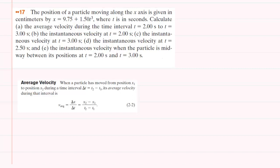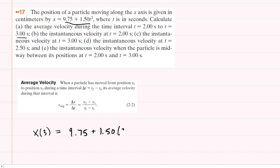What we'll need to do is actually figure out the two position values. We're going to calculate the position at a time of 3 seconds first. So x of 3 — to do that we simply plug 3 into this equation for t. So we'll have 9.75 plus 1.50 times 3 seconds cubed, and when you punch this into your calculator you get 50.25.